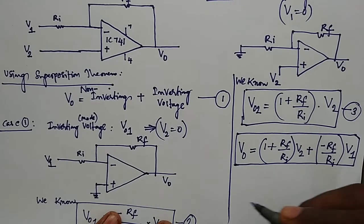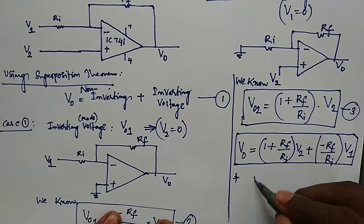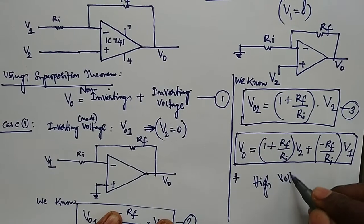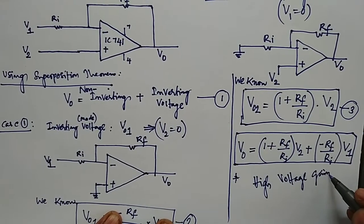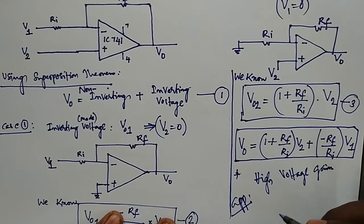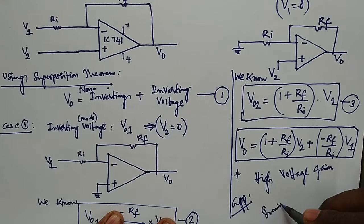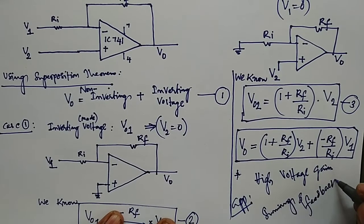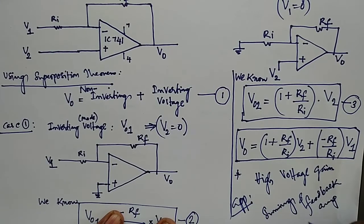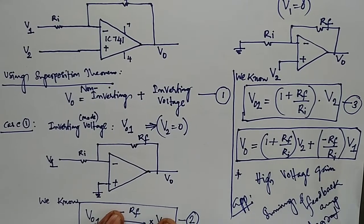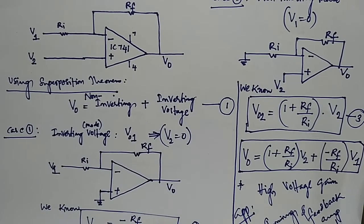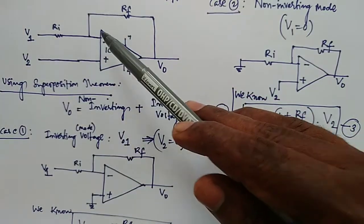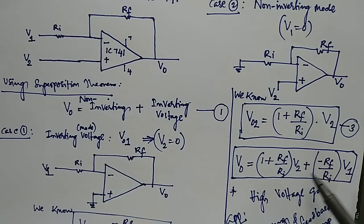The difference amplifier's main function is to provide high voltage gain. Major applications include summing, feedback amplifier purposes, and integrator purposes. The final conclusion is that it adds two input signals, where one of the inputs is negative because V1 is connected to the negative terminal — that is the meaning of the difference amplifier.